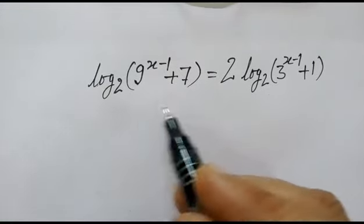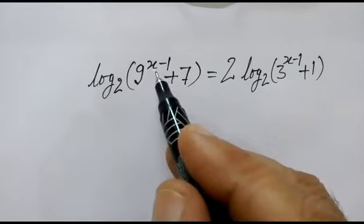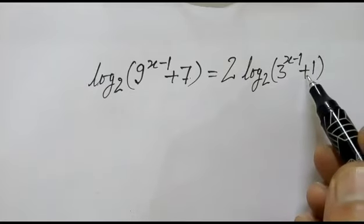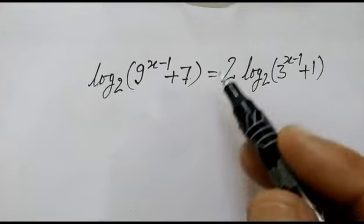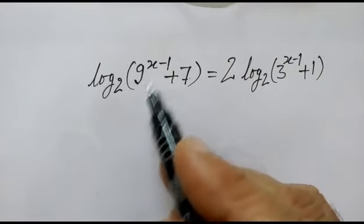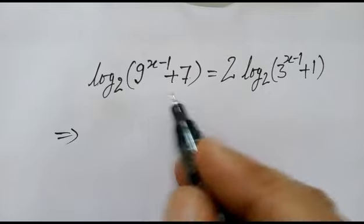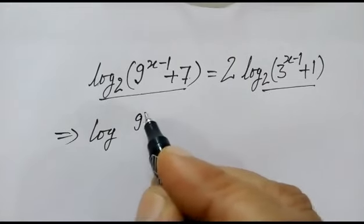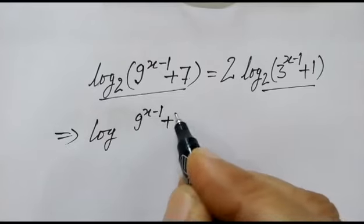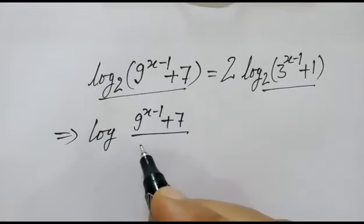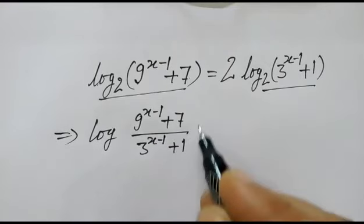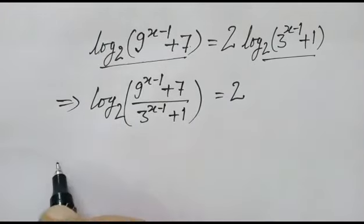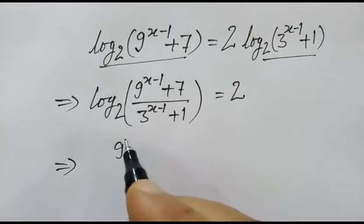We have a logarithmic equation: log base 2 of (9 to the power x minus 1 plus 7) is equal to log base 2 of (3 to the power x minus 1 plus 1). We have to find the value of x. We can write this as log base 2 of (9^(x-1) + 7) over (3^(x-1) + 1) is equal to 2.